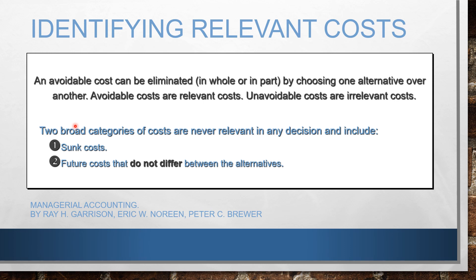There are two broad categories of costs that are never relevant in any decision. These include sunk costs that we have already incurred in the past, and future costs that do not differ between alternatives — costs that are present in alternative one and also present in alternative two.